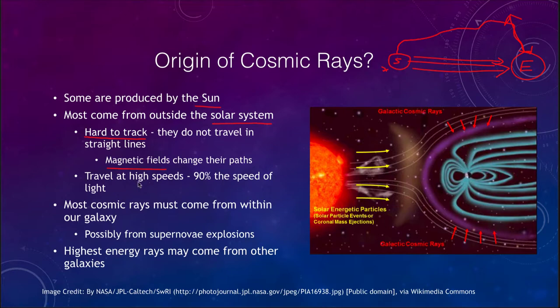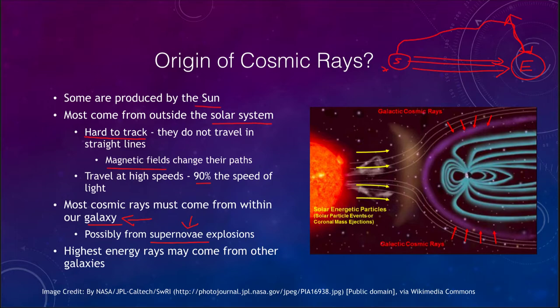Cosmic rays do travel at high speeds — about 90% of the speed of light, so a little bit slower than light and electromagnetic radiation itself, but still very, very high speeds. Most of them come from outside our solar system and from within our galaxy. We think that perhaps supernova explosions give us a lot of these cosmic rays — a massive explosion would send out streams of particles that just keep traveling through space with nothing to slow them down, continuing at very high energies for thousands or millions of years until they eventually strike something like the Earth.